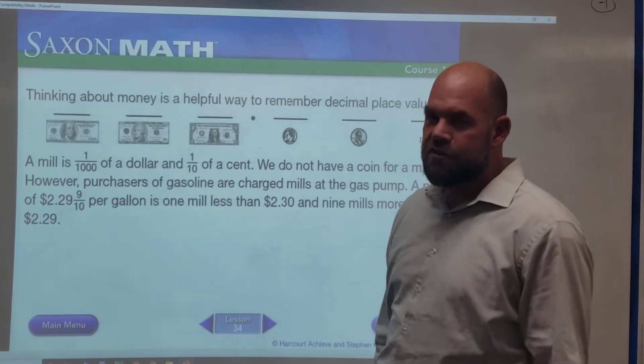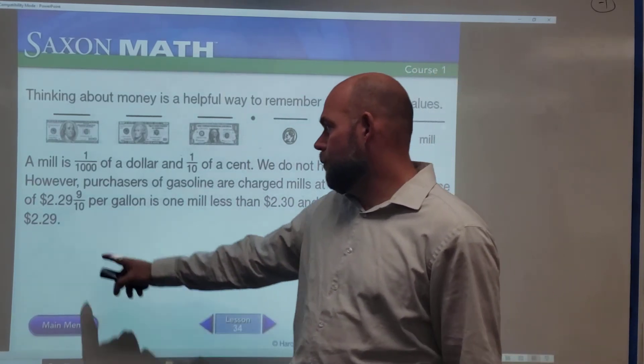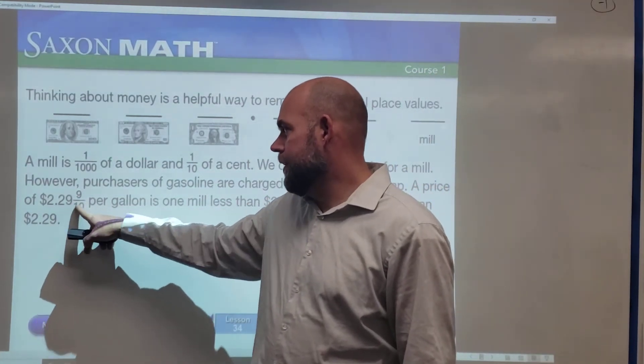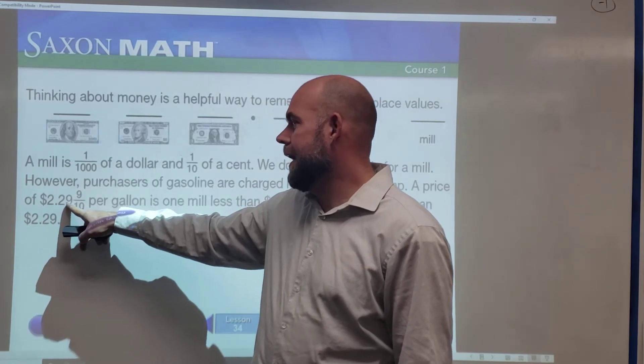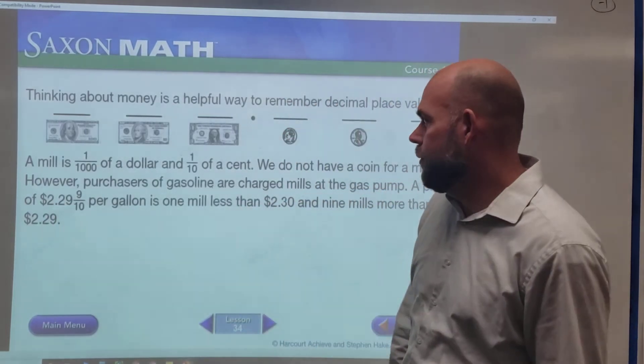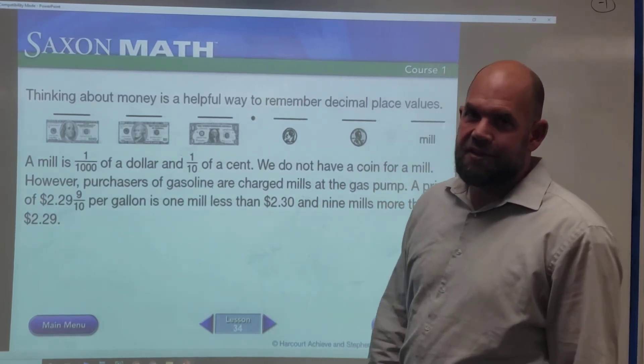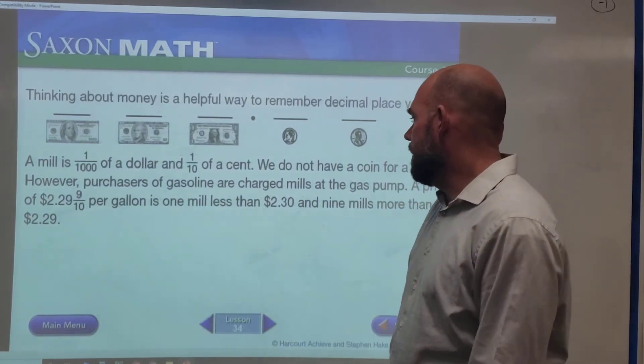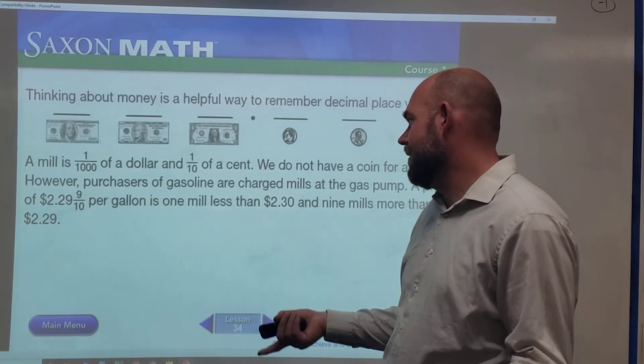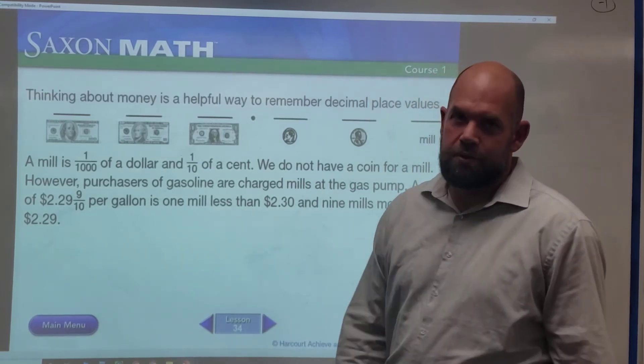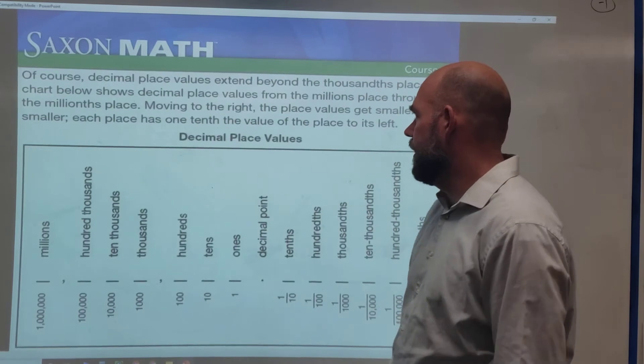We use that in gas, which is stupid. We could easily just round to 2.30 instead of 2.299, which is 2.29 and nine-tenths. I don't know why they do that—I think it's mostly tradition. But you can think of 2.299 as about the same as 2.30. It's just a little bit less.